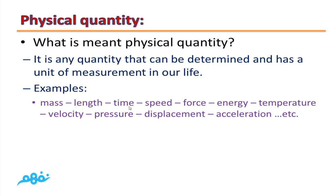Temperature is measured in degrees Celsius or degrees Fahrenheit. Velocity has the same unit as speed: meters per second or kilometers per hour. Pressure — its unit is Pascals or Newtons per meter squared. Displacement has the same unit as distance: meters or kilometers. Acceleration — its measuring unit is meters per second squared or kilometers per hour squared. All of these quantities are called Physical Quantities because they can be measured and they have a unit of measurement.